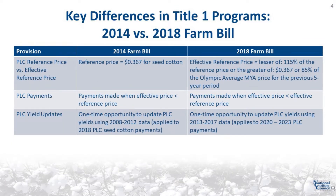Continuing with the key differences in Title I Farm Bill provisions, the 2018 Farm Bill also includes several changes to the PLC program. Under the 2014 Farm Bill, USDA established a statutory reference price for each commodity, which is 36.7 cents for seed cotton. The provisions of the 2018 Farm Bill include an escalator provision that could potentially increase the effective reference price to as much as 115% of the statutory reference price, based on 85% of the five-year Olympic average of the national average marketing year price. For seed cotton, the effective reference price is expected to be 36.7 cents. The 2018 Farm Bill provisions allow owners and operators to update PLC payment yields starting with the 2020-21 crop year, based on 2013 to 2017 data.